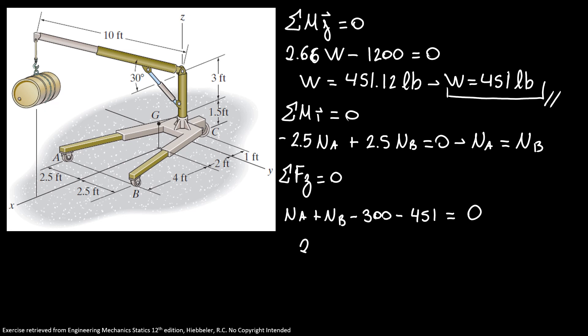So, we have 2 times normal A or normal B is equal to 751. So, our normal A is equal to normal B is equal to 375.6 pounds. Using our 3 sig figures, we have that N_A is equal to N_B is equal to 376 pounds.